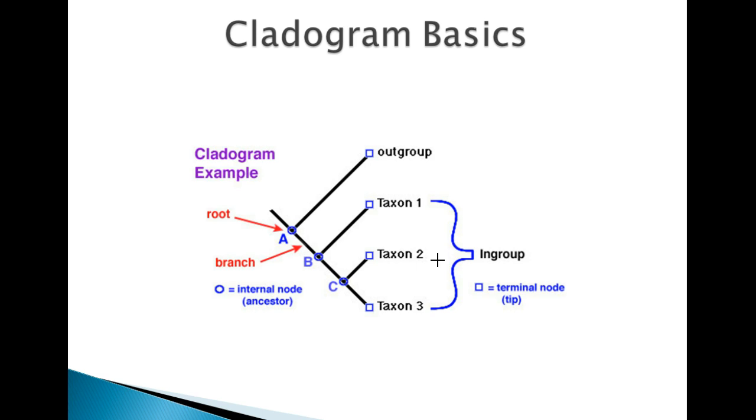Likewise, the clade that includes all four terminal nodes, one, two, three, four, and their most reasonably shared common ancestor originates at node A and includes all its descendants, meaning everything that comes after node A. So this entire thing would also be a clade. Because we're talking about this ancestor A, everything that comes after it, including this outgroup, would also be considered a clade. Make sure you understand that.